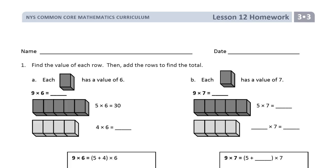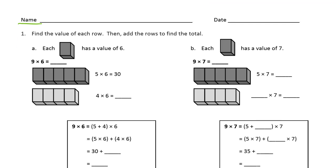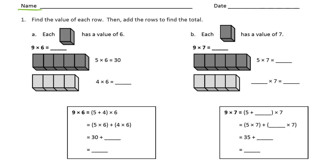Welcome to the homework for lesson 12. This is module 3 of grade 3. Please write your name first. These are some of the forms you've seen many times with many other numbers, so we should be getting familiar by now. Find the value of each row and then add the rows to find the total.